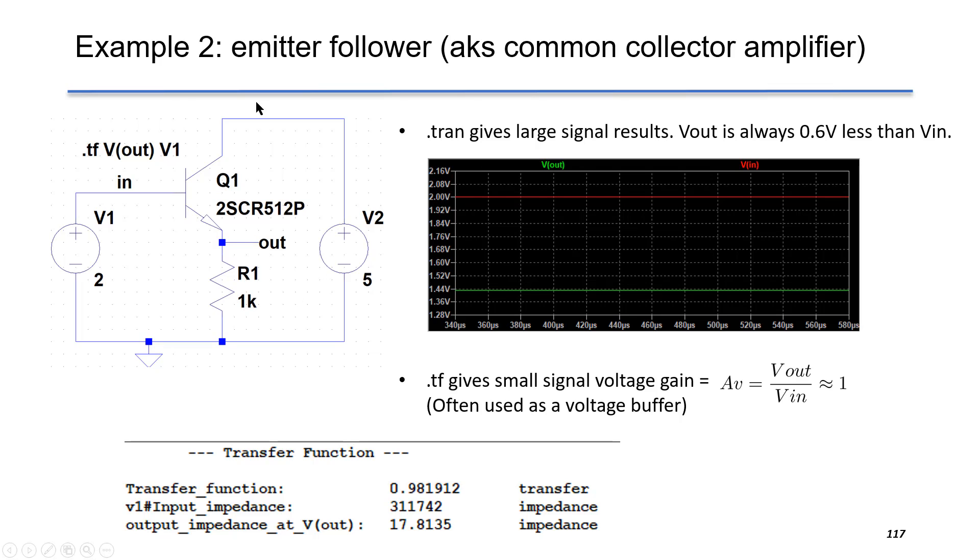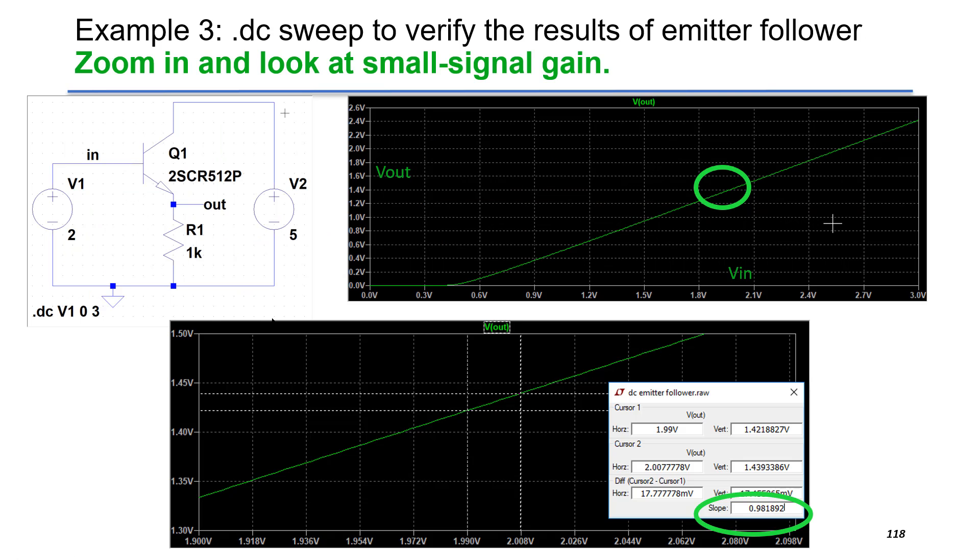Therefore, this circuit is often used as a voltage buffer. We can use DC sweep over V1 to verify our results on the previous slide. The upper figure is a large signal transfer function of V out over V in.